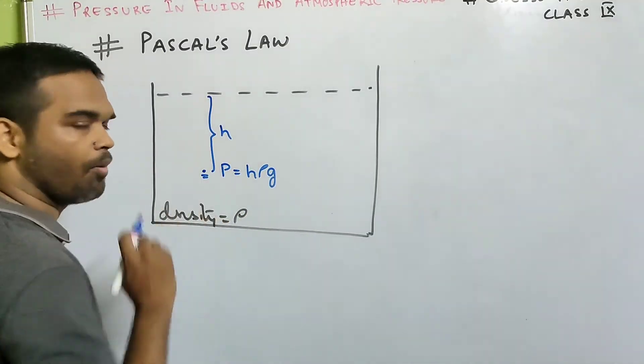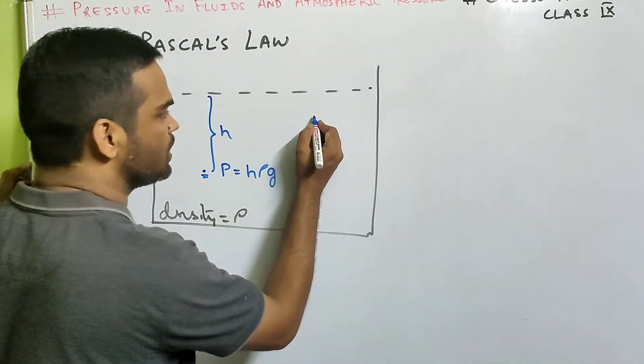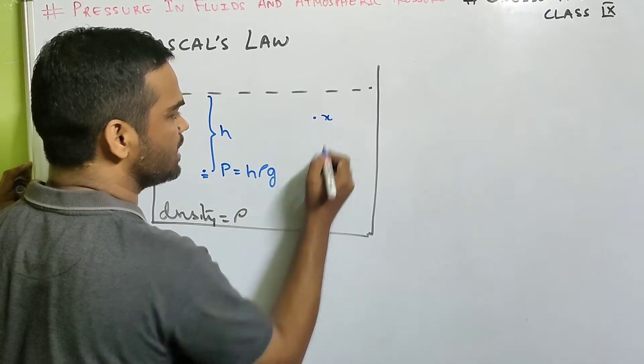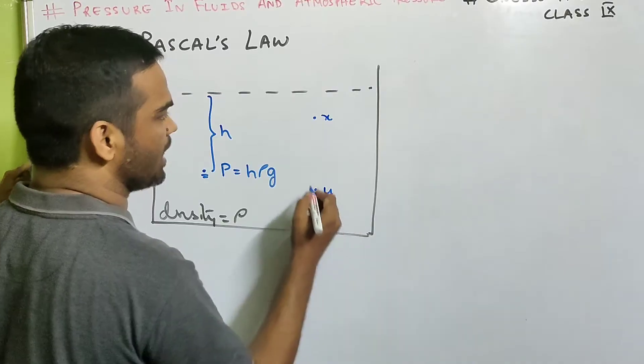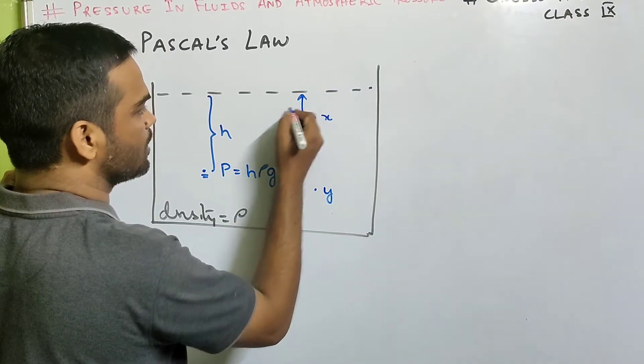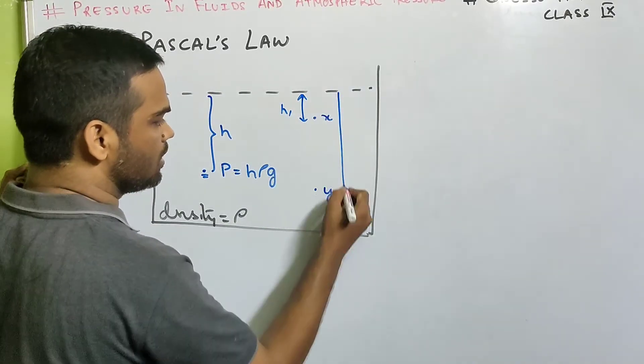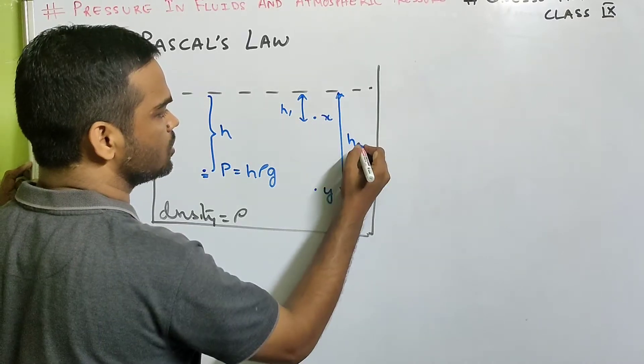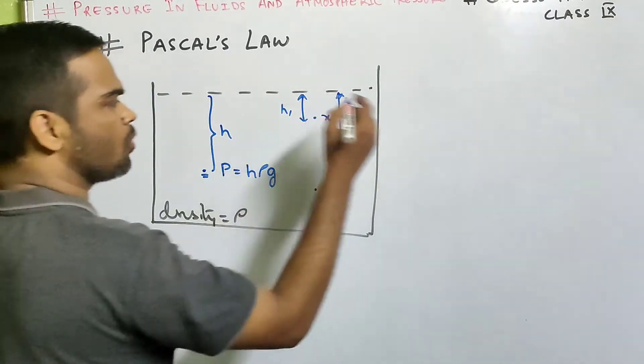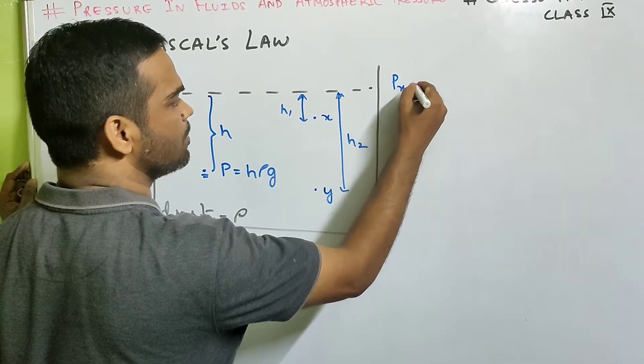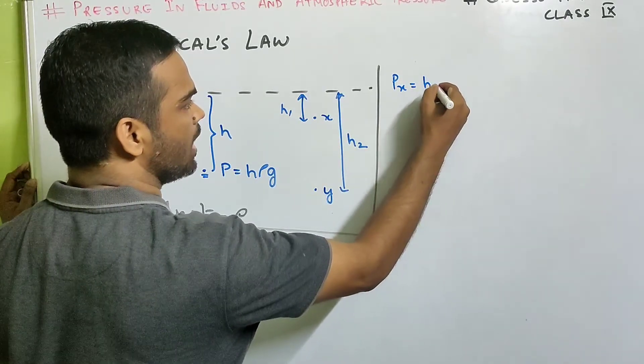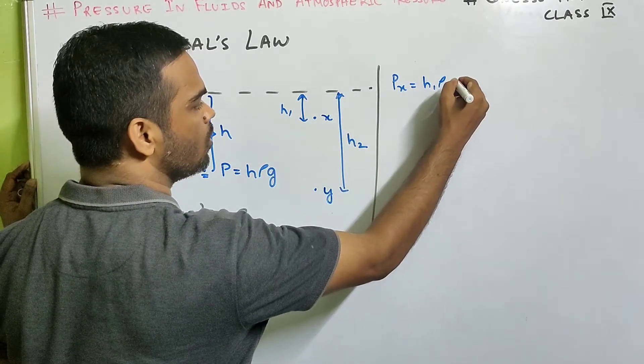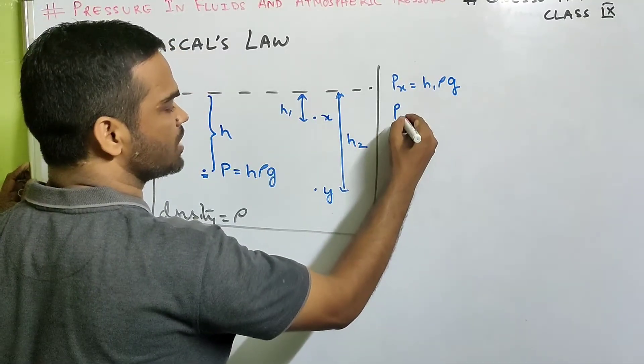So that is equal to the pressure at that point. Now suppose we take two points, x and y. This is at a depth h1 and it is at a depth h2. So what will be pressure at x? Pressure at x will be h1 rho g and what will be pressure at y?